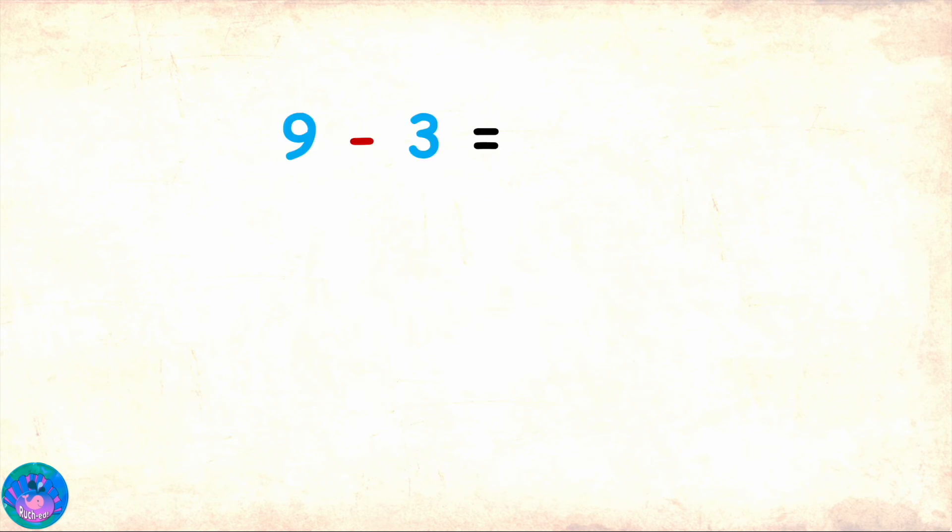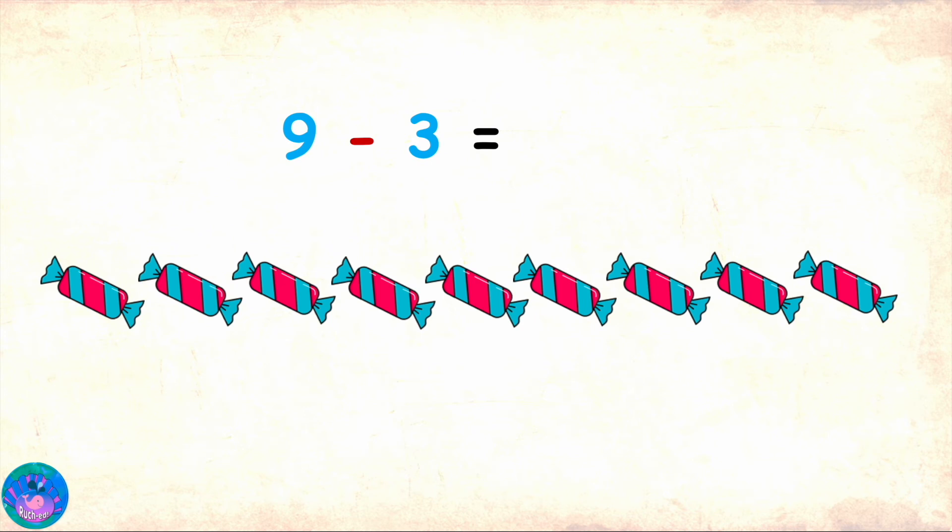Now, let's do 9 minus 3. And I am going to use candies to represent numbers. Here are the 9 candies. Let's see. 1, 2, 3, 4, 5, 6, 7, 8, 9. And we have to take away 3 out of those. So, remember you can cut or remove. Let me cut 3. 1, 2, 3. And how many are we left with? 1, 2, 3, 4, 5, 6 candies. And this tells us that 9 minus 3 equals 6.